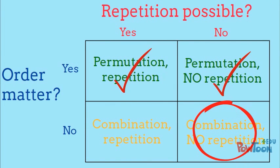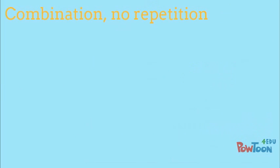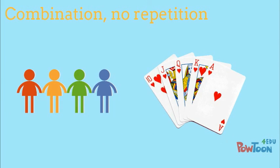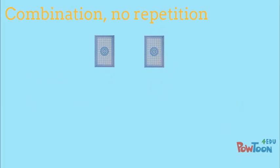Next, we're going to look at combinations without repetition. Examples of combinations without repetition include groups of people and poker hands.